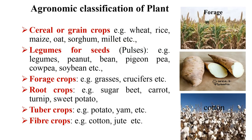Now let's discuss the agronomic classification of plants. The first category is cereal or grain crops — grasses grown for their edible seeds, examples being wheat, rice, maize, oat, and sorghum. Next are legumes or pulses — seed crops belonging to family Leguminaceae grown for their edible seeds, examples including peanut, beans, pigeon peas, and soybean. Forage crops are crops grazed by animals; when harvested as whole plants and cured for animal feed they are termed fodder, mostly belonging to Graminae or Leguminaceae. Root and tuber crops are vegetable crops grown for underground parts like roots, bulbs, rhizomes, corms, and stem tubers — examples being sugar beet, carrot, turnip, sweet potato, potato, and yam.